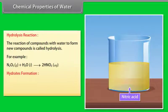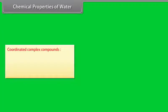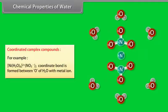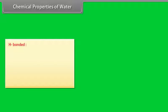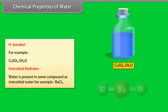Hydrates formation: Water forms hydrates with metal salts. There are three main types: Coordinated complex compounds, for example nickel-2-nitrate hexahydrate where a coordinated bond is formed between O of H2O with metal ion. H-bonded, for example copper sulfate pentahydrate. Interstitial hydrates where water is present in some compounds as interstitial water, for example BaCl2.